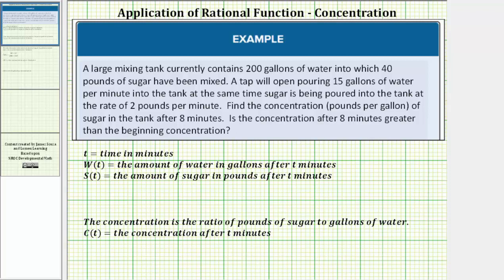A large mixing tank currently contains 200 gallons of water into which 40 pounds of sugar have been mixed. A tap will open pouring 15 gallons of water per minute into the tank; at the same time, sugar is being poured into the tank at a rate of two pounds per minute. Find the concentration — in pounds per gallon — of sugar in the tank after eight minutes. Is the concentration after eight minutes greater than the beginning concentration?